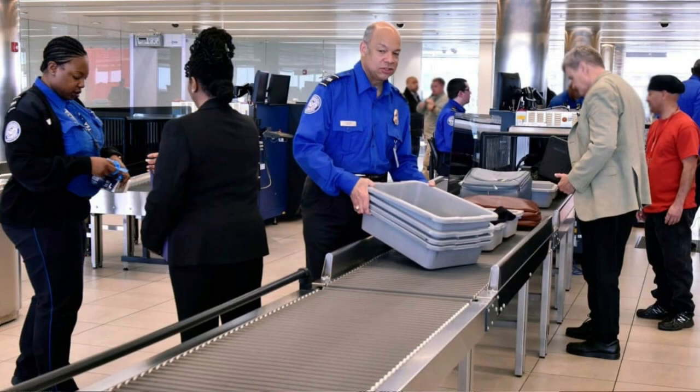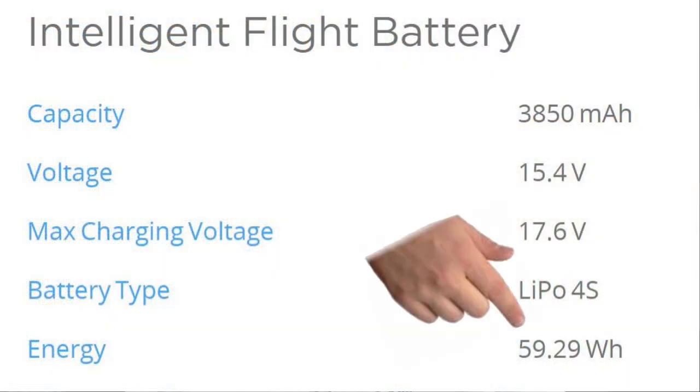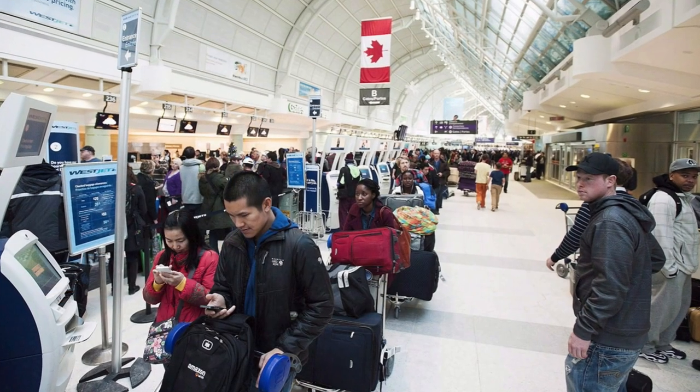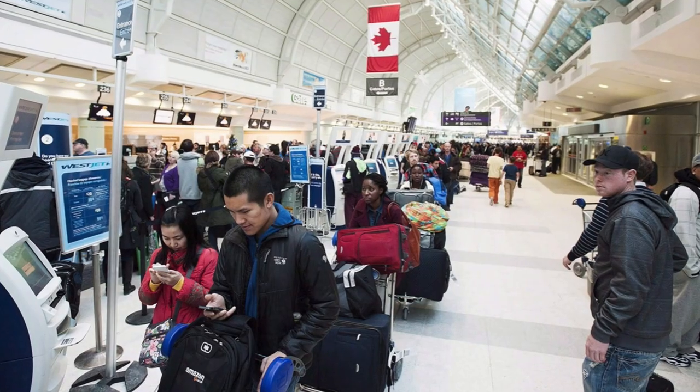Surprisingly, you are permitted to travel on aircraft with LiPo batteries — in your carry-on luggage, not in your checked luggage. Individual batteries must be less than 100 watt hours. For reference, a Mavic 2 battery is 59 watt hours, but a Matrice 200's battery clocks in at 175 watt hours — over that limit. I would advise checking with your airline in advance to ensure you won't run into difficulty at boarding time.